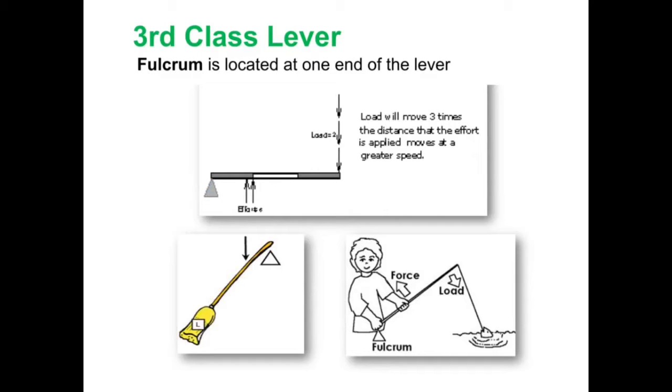So this is not going to make work easier for someone, but it will make the resistance move farther and at a greater speed. So a good example is going to be the broom and also the fishing pole.